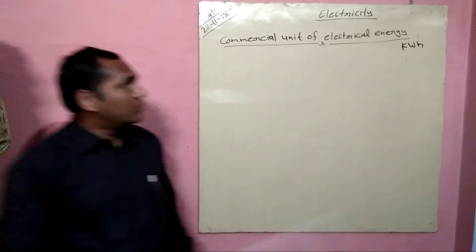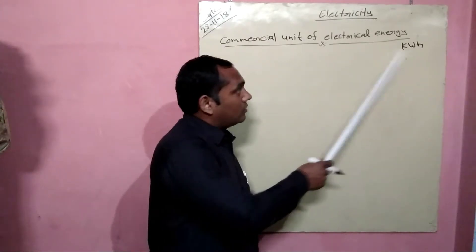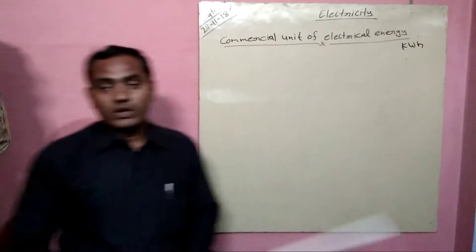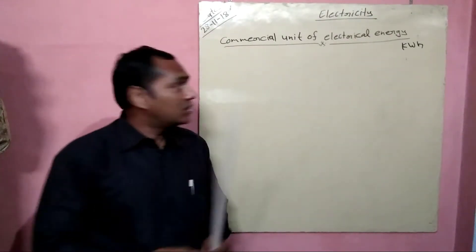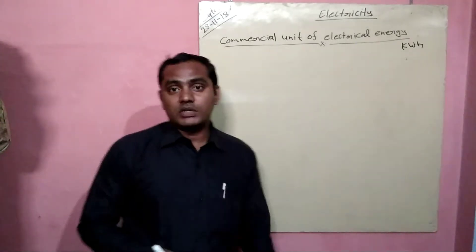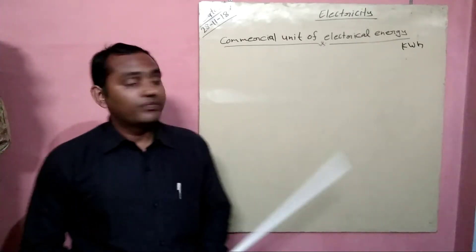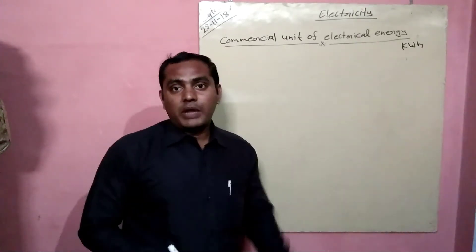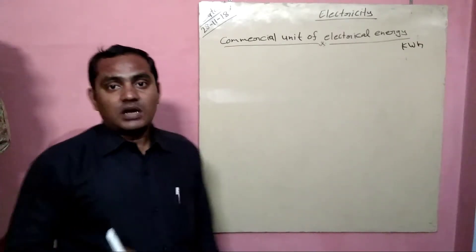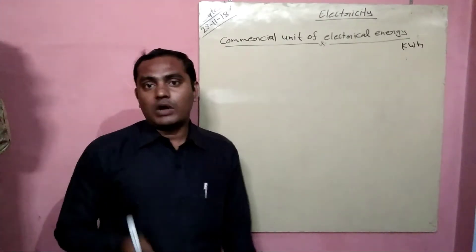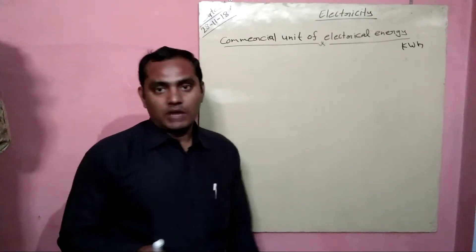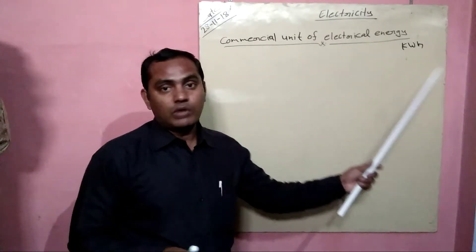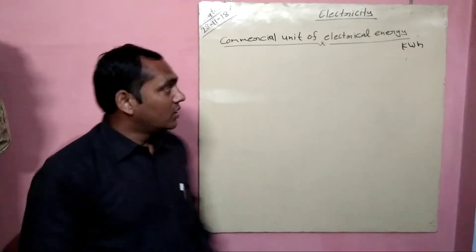So firstly, we should know what kilowatt hour is. One kilowatt hour is the amount of energy consumed by any electrical appliance of one kilowatt rating used for one hour. That is known as one kilowatt hour energy.